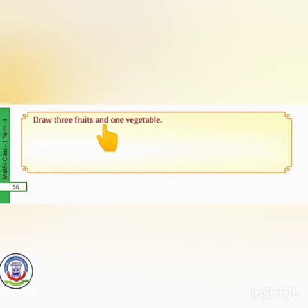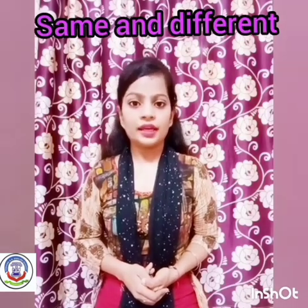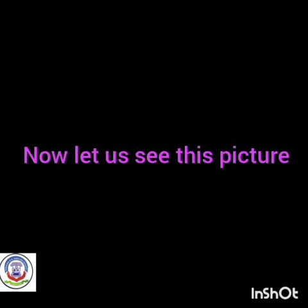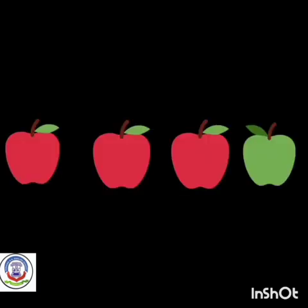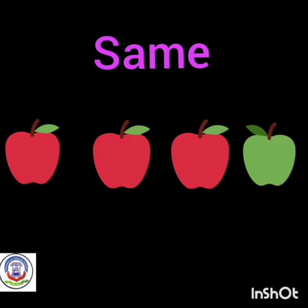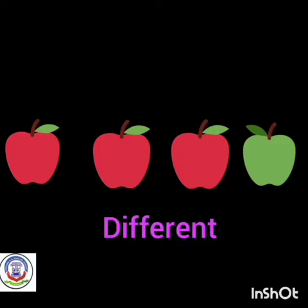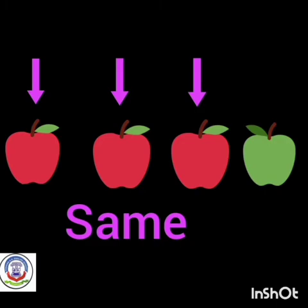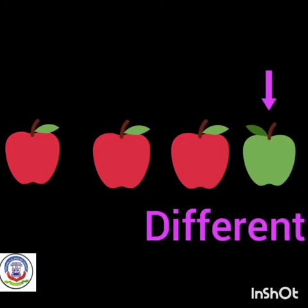Draw three fruits and one vegetable. Now we will discuss the concept of same and different. Let's start. See this picture of apples and identify which apples are the same and which is different. These three apples are the same and this apple is different.